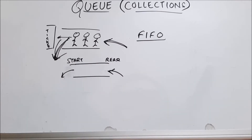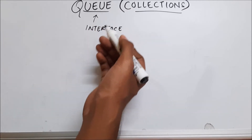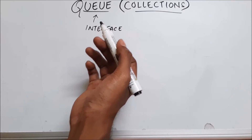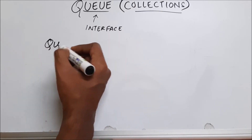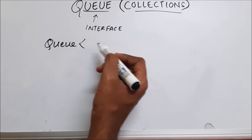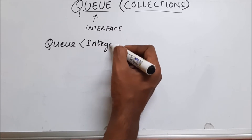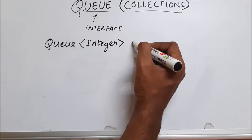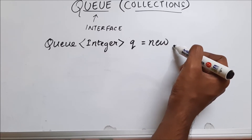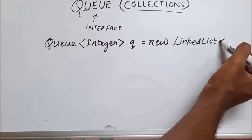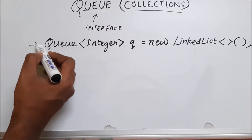Now let's see how we can declare a queue in Java. Queue is an interface in Java, so we cannot directly create a queue. Hence, we will use something called LinkedList. The syntax is: Queue, then the type of elements in angle brackets — in this case, Integer — then a name for the queue, then the new keyword, and LinkedList with angle brackets, finished with parentheses. This is how we declare a queue in Java with the help of LinkedList.